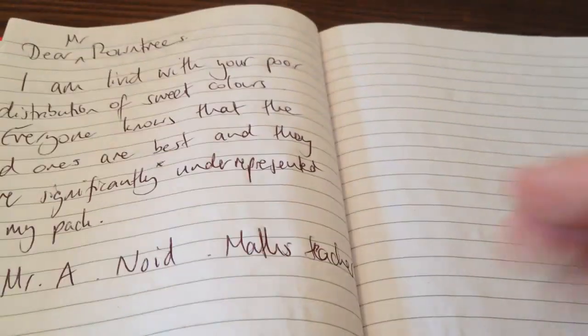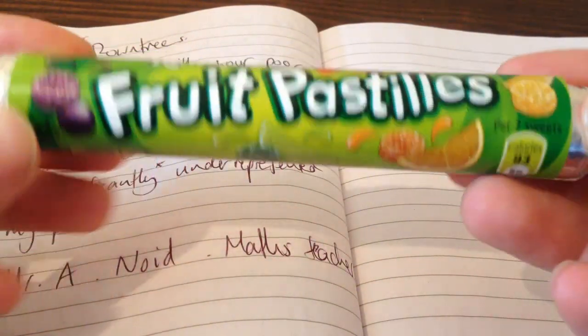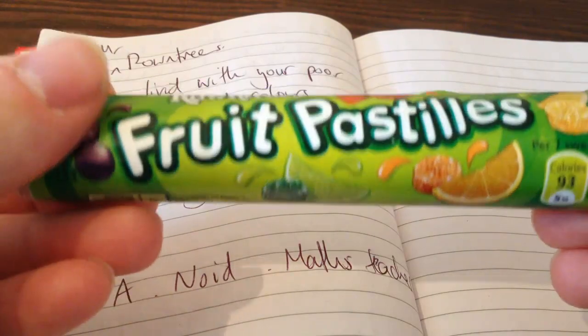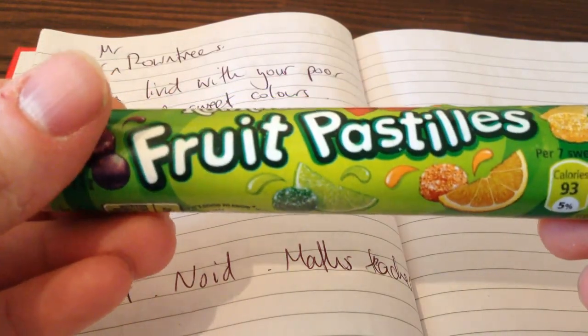Hi, I'm going to talk you through something very important to do with maths and it's about eating sweets. Everybody knows that the red ones are the best ones, but I'm not convinced that Roundtrees distribute their sweets fairly.